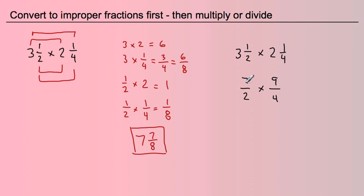Now it becomes a multiplying fractions problem. 9 times 7 equals 63, and then 2 times 4 equals 8. Now I have an improper fraction, and I will divide to turn that into a mixed number. 8 times 7 equals 56, and then 63 minus 56 is 7.